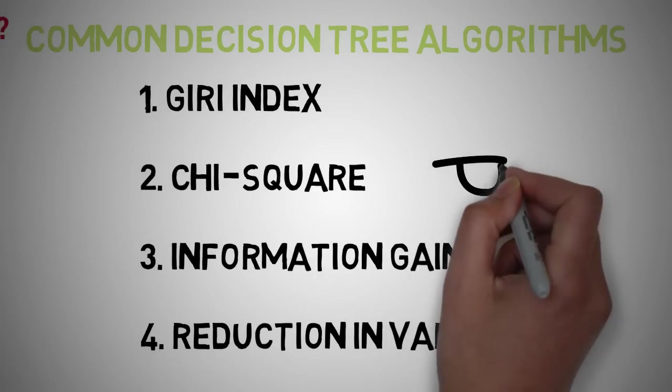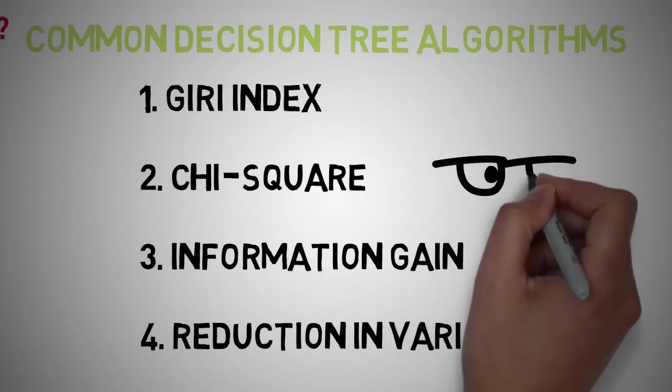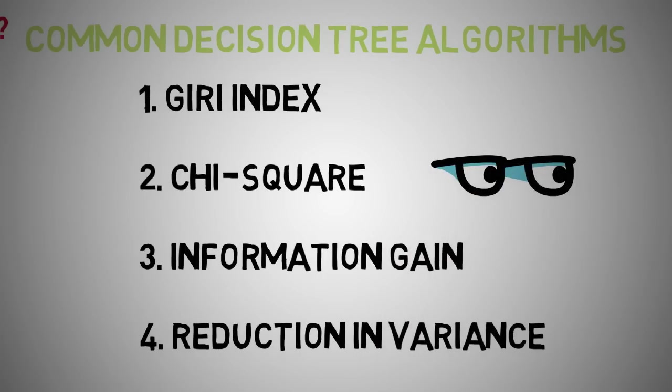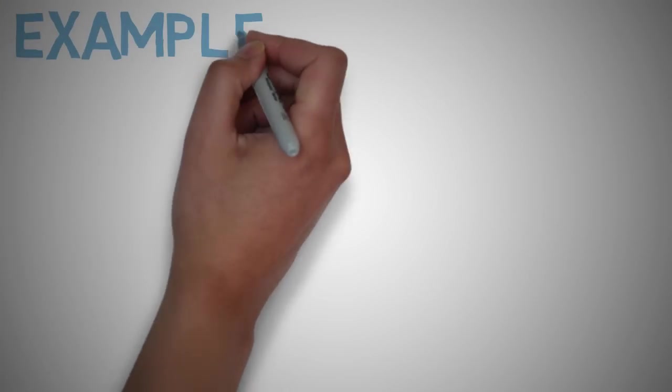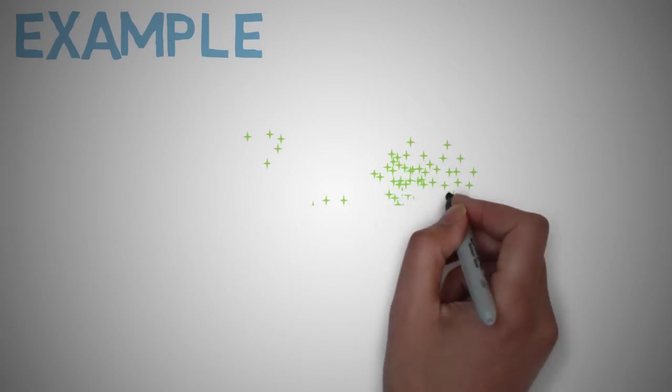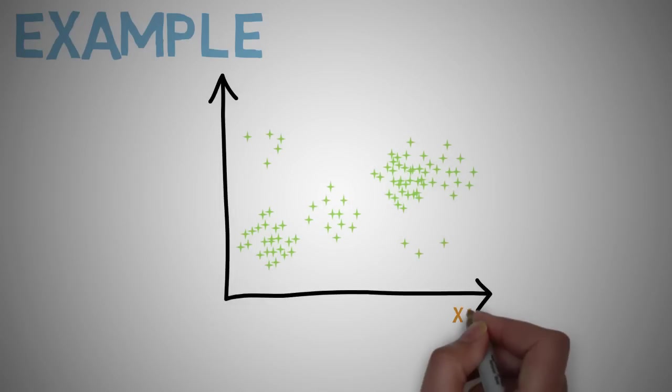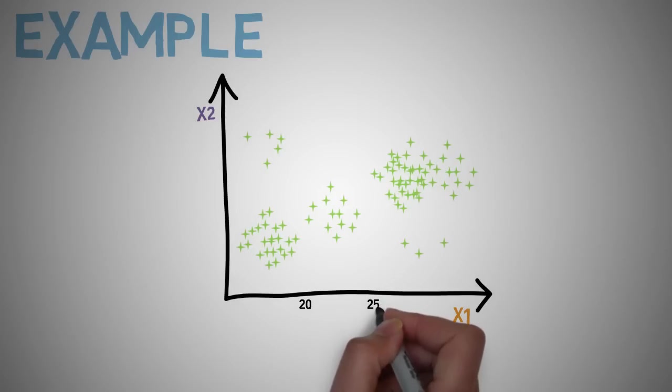One: Gini index. Two: Chi-squared. Three: information gain. Four: reduction in variance. We'll not go into detail on these algorithms as some involve quite a lot of math and most of the hard work is done within scikit-learn's libraries. Let's gain an intuition of how splitting the data would work if we had to do it manually. Over here we have arbitrarily generated data. We have x1 and x2, which are our independent variables.